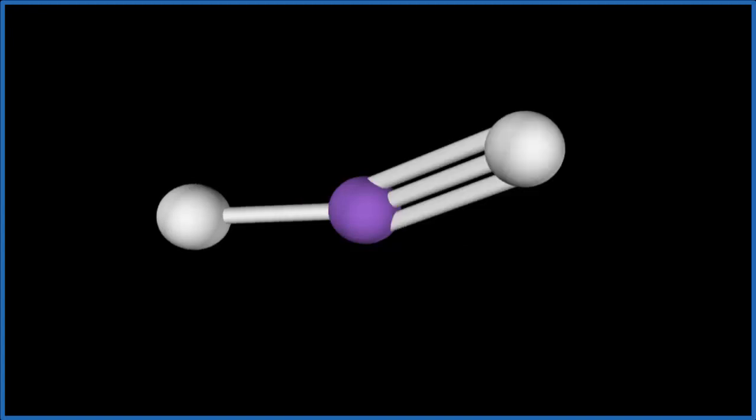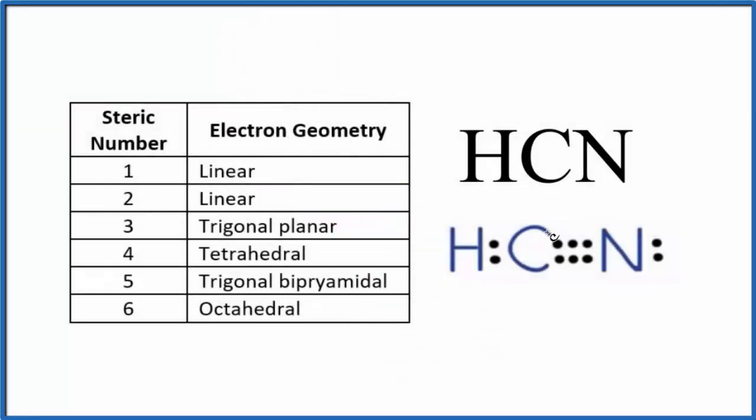Let's go back to our Lewis structure. So to recap, we have that carbon there in the center. We have two things bonded to it, no lone pairs on the carbon, so those spread out. They give us that linear electron geometry. Since we don't have any lone pairs on that carbon, it's also the molecular geometry for HCN.